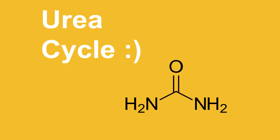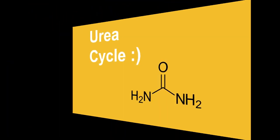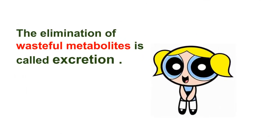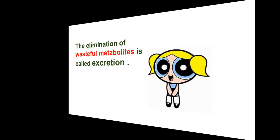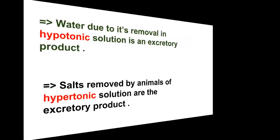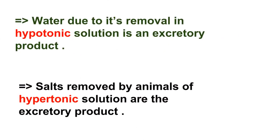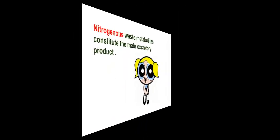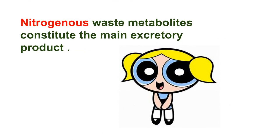Before discussing the urea cycle in detail, you must know the meaning of excretion. The elimination of wasteful metabolites is called excretion. Water removed in hypotonic solution is an excretory product, whereas salts removed by animals in hypotonic solution are excretory products for those animals. Nitrogenous metabolites constitute the main excretory product.